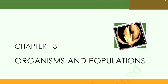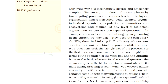Chapter 13: Organism and Population. Our living world is fascinatingly diverse and amazingly complex. We can try to understand its complexity by investigating processes at various levels of biological organization: macromolecules, cells, tissues, organs, individual organisms, population, communities and ecosystem and biomes.